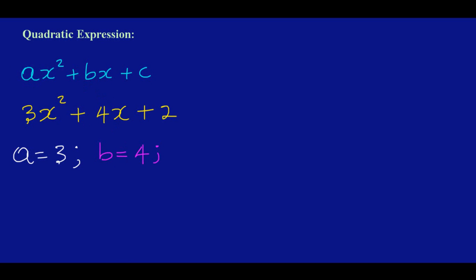And again, I could ask you what is the value of C. And C is the constant, and you notice we have a number here, which is 2. So C would be 2. And that's how you identify what is A, B, and C in a quadratic expression.